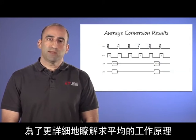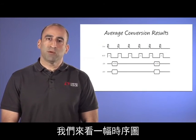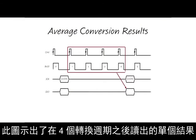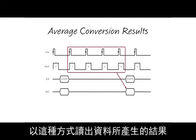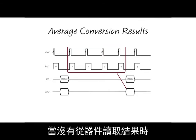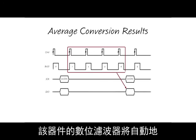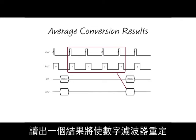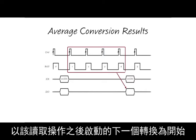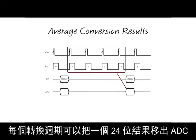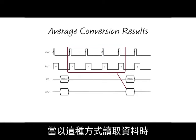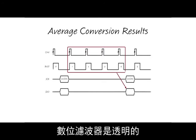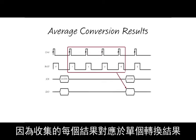For more detail on how the averaging works, let's look at a timing diagram that shows a single result being read out after four conversion cycles. Reading out the data in this way produces a result that is the average of four conversion results. The digital filter will automatically average conversion results when no results are read from the device, up to the maximum number of 65,536. Reading out a result resets the digital filter and starts a new averaging operation, beginning with the next conversion initiated after the read. A 24-bit result may be shifted out of the ADC every conversion cycle, and the digital filter is transparent when reading data in this way, since every result collected corresponds to a single conversion result.